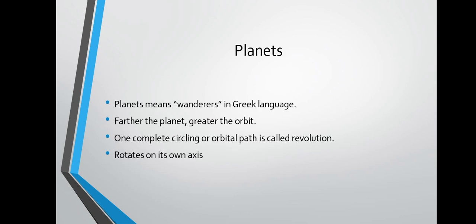Planets means 'wanderers' in Greek language. The farther the planet, the greater the planet. One complete orbital path around the sun is called a revolution, while rotation is spinning on its own axis. The important difference to remember: revolution is completing an orbit around another body, while rotation is the complete spin on its own axis.